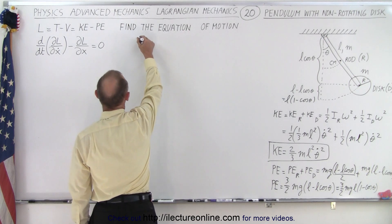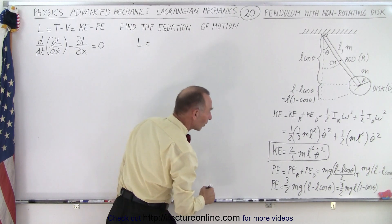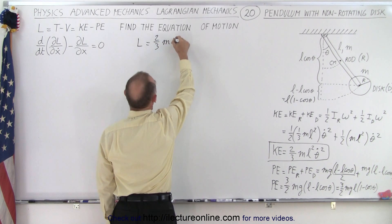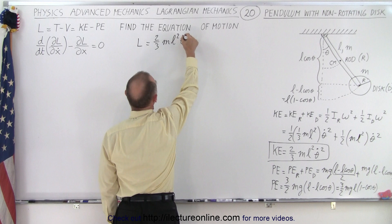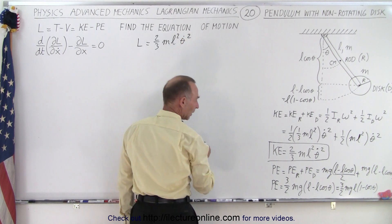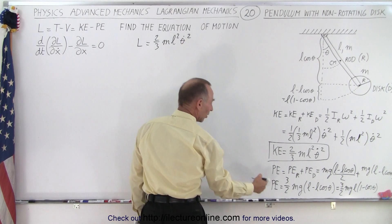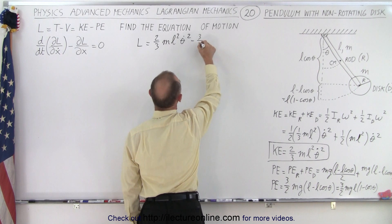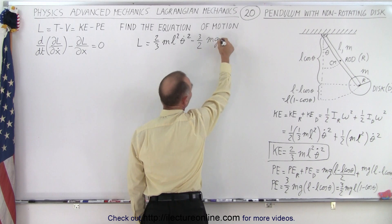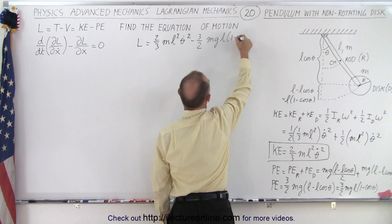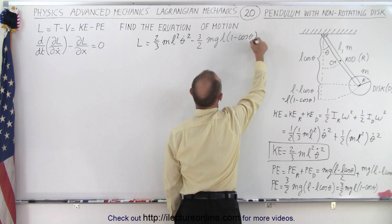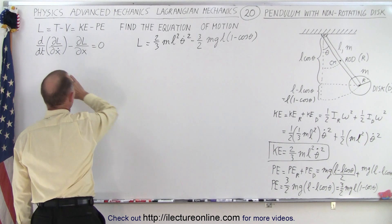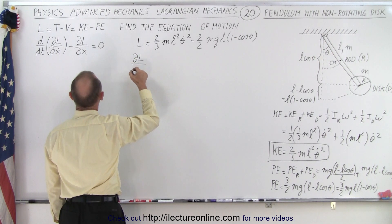Now we have both the kinetic and potential energy, so we can write the Lagrangian as the difference between the two: L = (2/3) m L² θ̇² minus (3/2) m g L times (1 minus cosine theta). Now we're ready to apply the Euler-Lagrange equation.